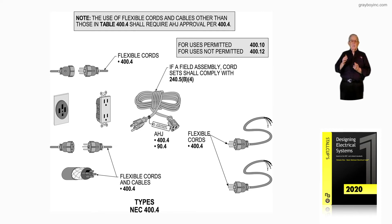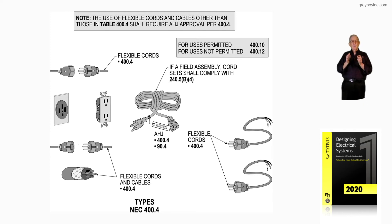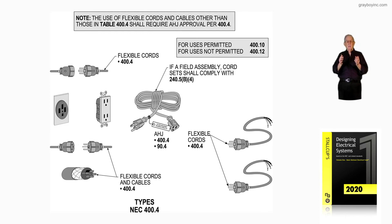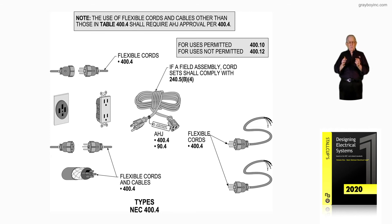And you can see that any flexible cord with a male attachment cap fully complies with 400.4. Here we target the field assembly cords, which tells us we can do this in 240.5B4. Then we have the uses and uses not permitted in 400.10 and 400.12.